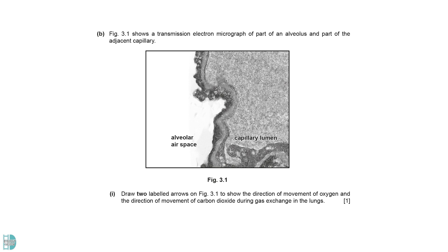B1 wants you to show the direction of movement of oxygen and carbon dioxide during gas exchange in the lungs. Oxygen moves from the alveolar space into the blood while carbon dioxide moves in the opposite direction. They move down their partial pressure gradient.